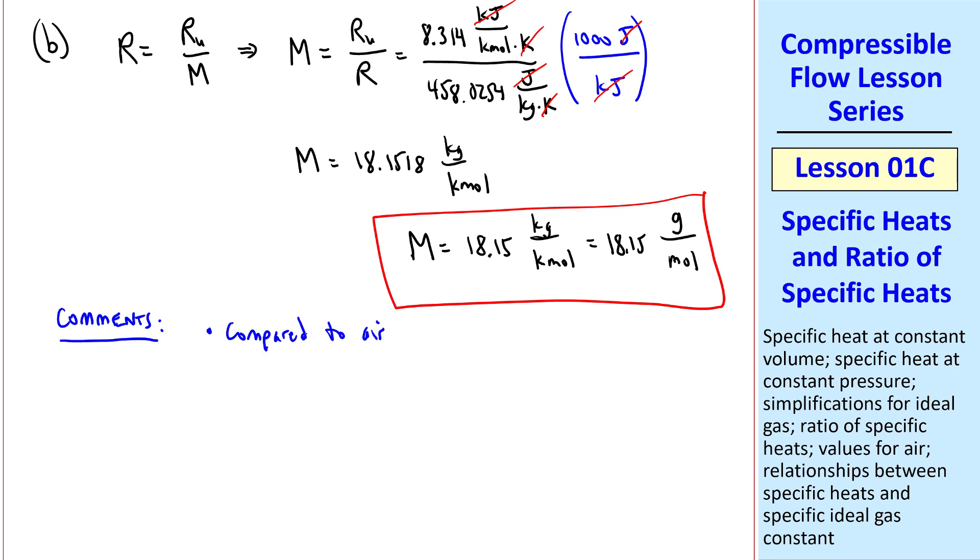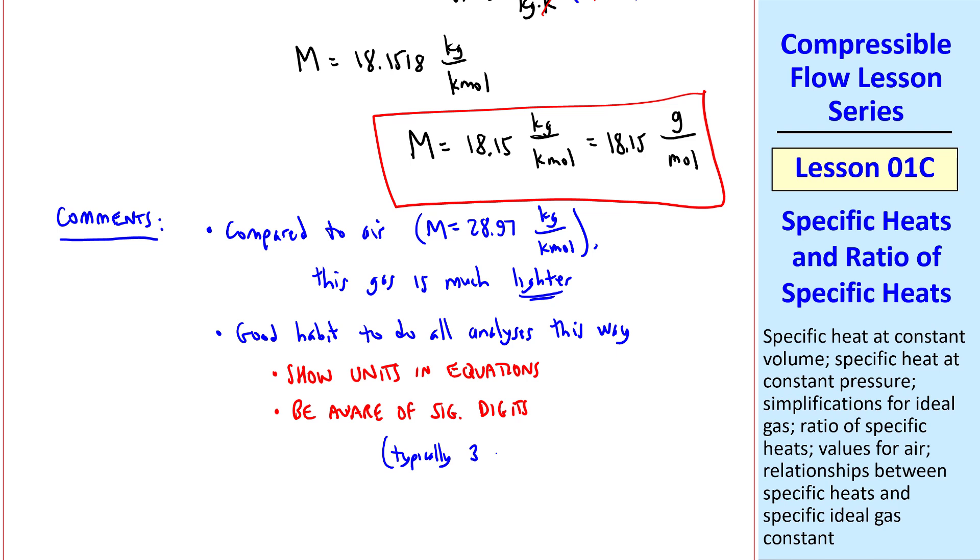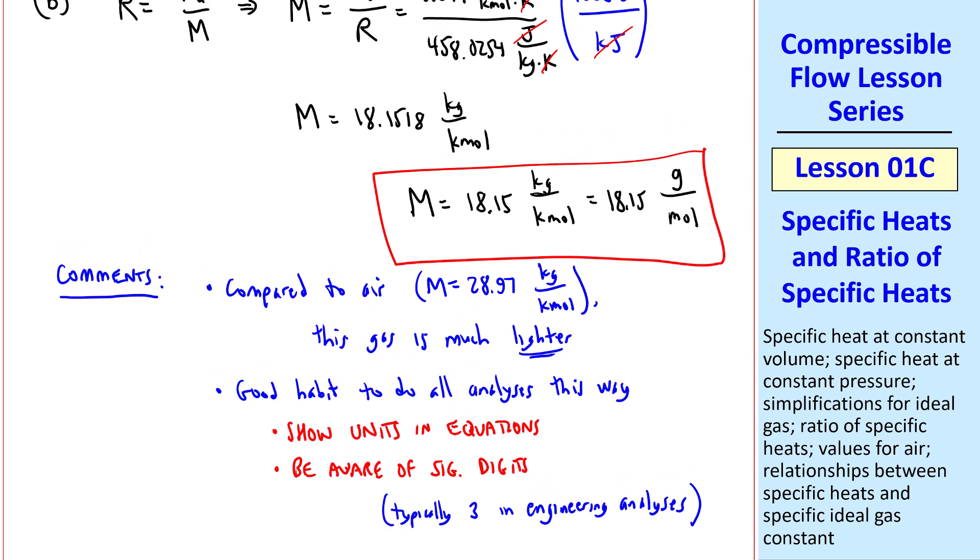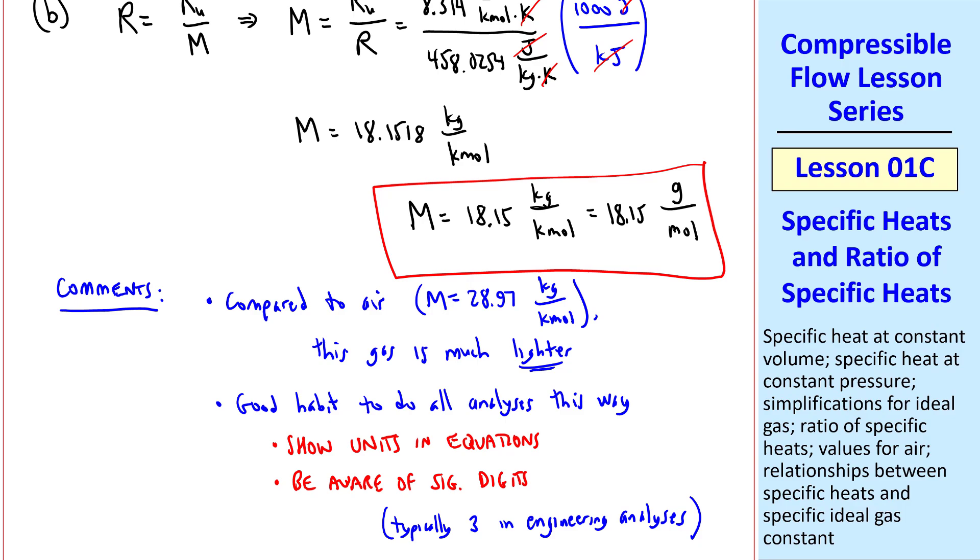Just a few comments here. Compared to air, where M was 28.97 kilogram per kilomole, this gas is much lighter. It is also a good habit to do all your analyses this way. Specifically, show your units in all the equations and be aware of significant digits. Typically, we give answers to three significant digits in engineering analyses. And finally, as I've already mentioned, keep extra digits when you're doing algebra with previously calculated values. Notice that I put all these digits here to avoid round-off error. And if I needed capital M in another equation, I would use this. But I give my answers to the appropriate number of significant digits, which here is four.